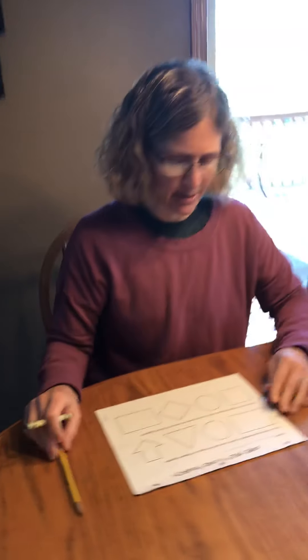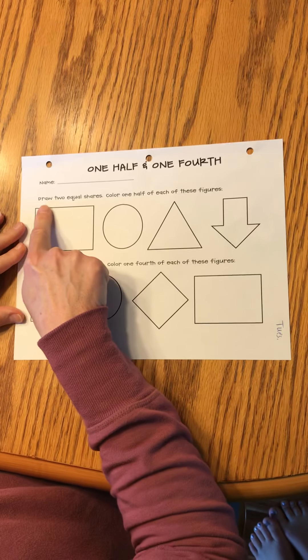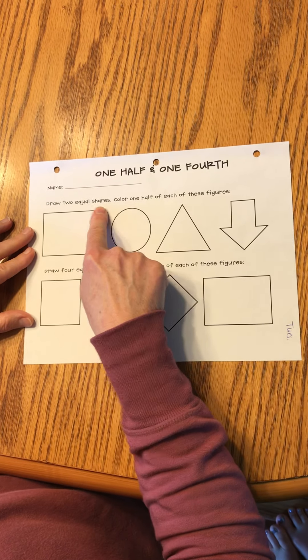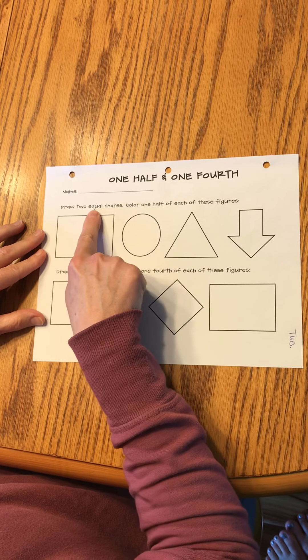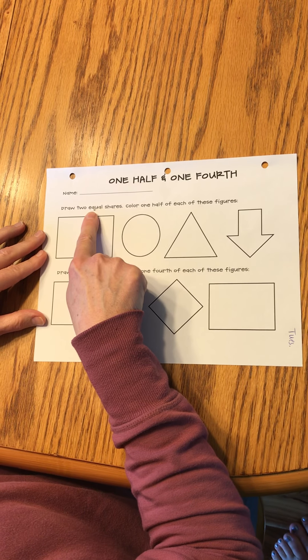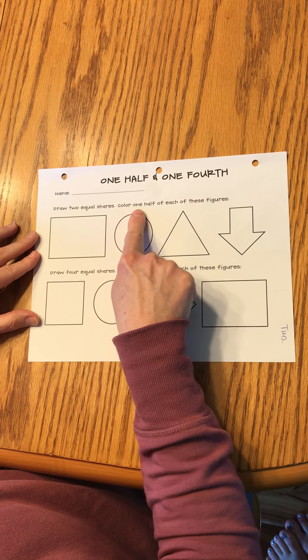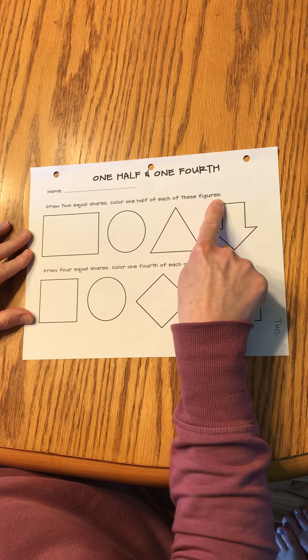Alright, here we go. Let's find out our job today. Today it says draw two equal shares. That means two equal pieces, two that are the same. Remember equal means the same. Color one half of each of these figures. So our first job is to cut it in half.